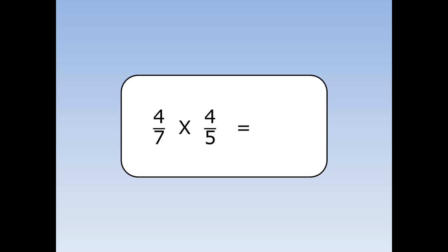4 sevenths times 4 fifths. For this question, both of the fours are on top, so I can't cancel. All I can do is continue as normal, and do 4 times 4 is 16, and 7 times 5 is 35.